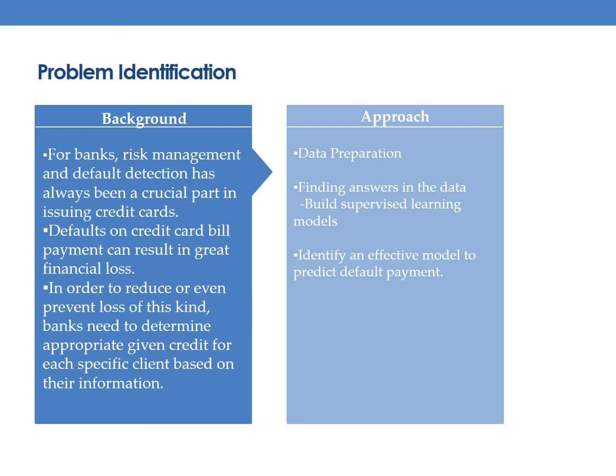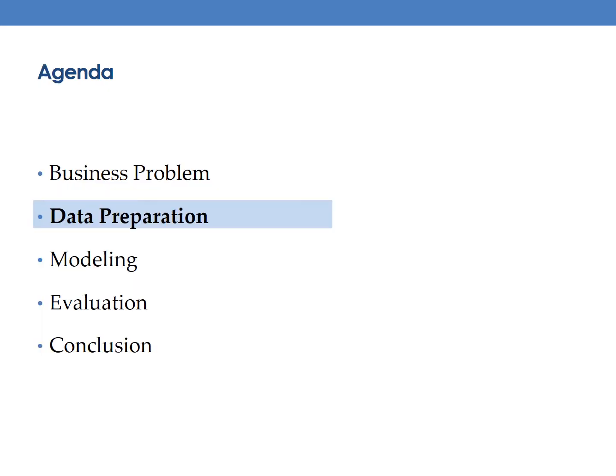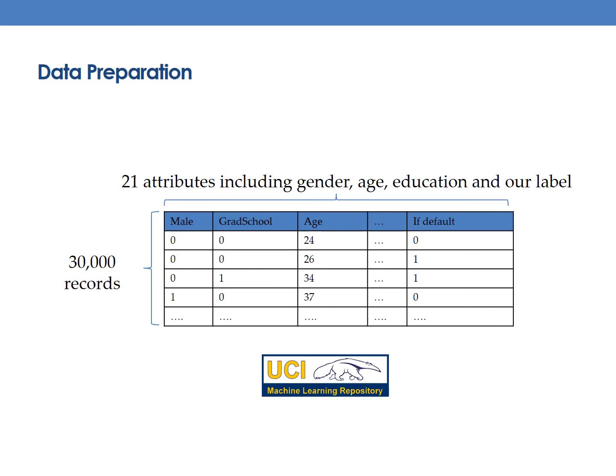We are going to use machine learning methods to find answers in the data. Data comes from UCI Machine Learning Repository. We have 30,000 records and 21 attributes including gender, age, education, and our label, which is default or not.